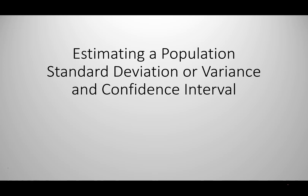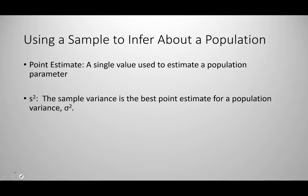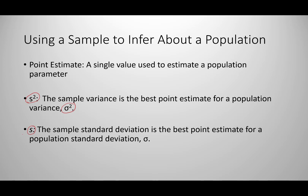We're going to take a quick look at how to estimate a population standard deviation or variance and then how to find an associated confidence interval. A point estimate is a single value that's used to estimate a population parameter. The sample variance, represented as s-squared, is the best point estimate for our population variance, which we represent with sigma squared. Our sample standard deviation, s, is our best point estimate for population standard deviation, sigma.